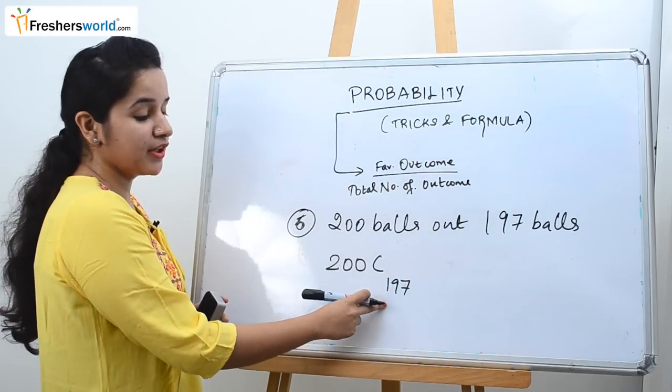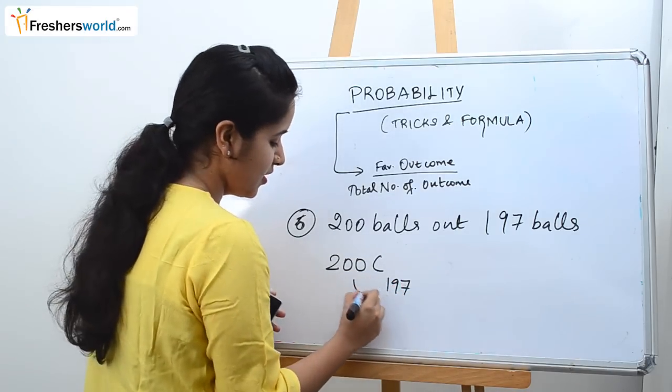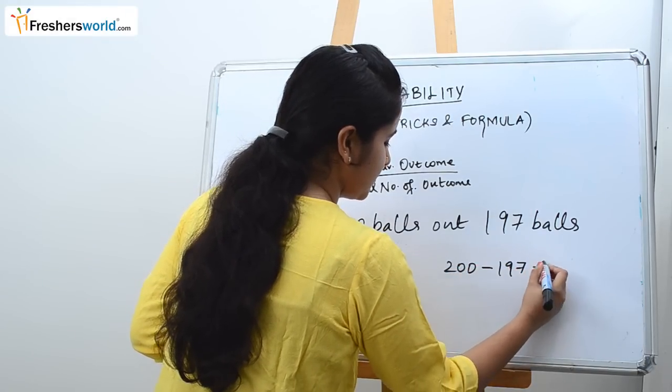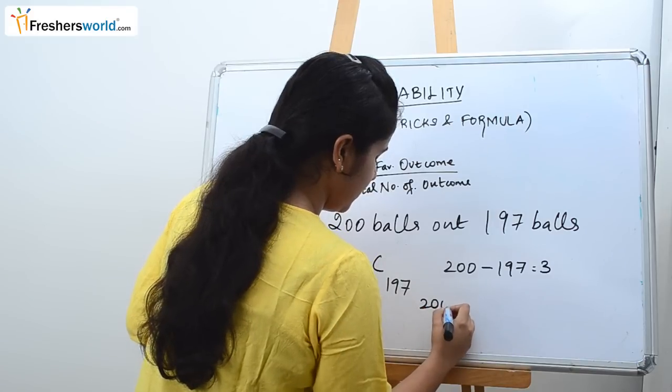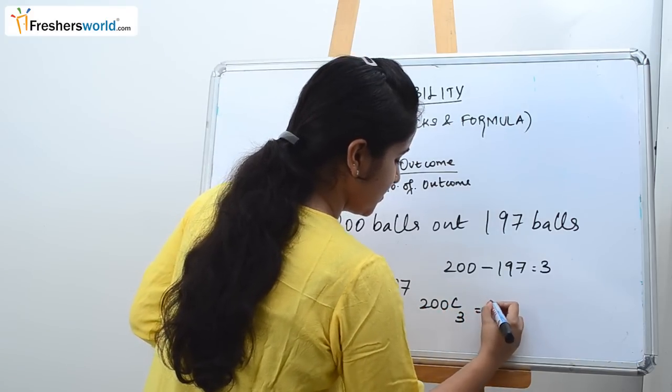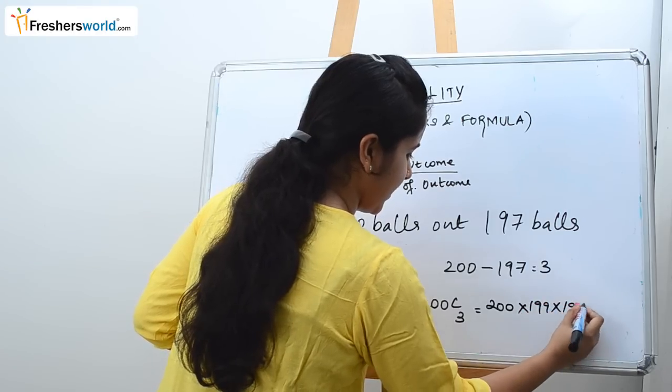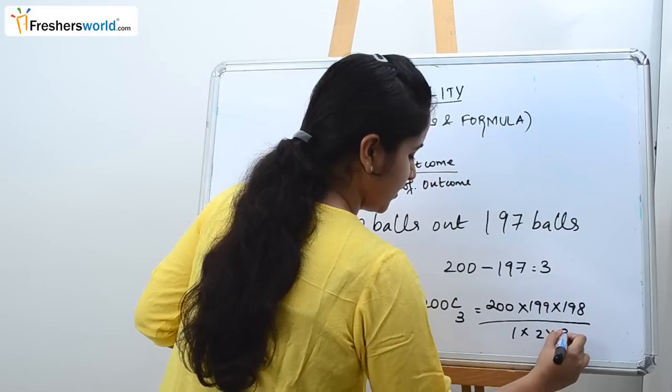So instead of reducing it 197 times what you do? You just subtract it. 200 minus 197 which is 3. So 200C3 which is 200 into 199 into 198 divided by 1 into 2 into 3.